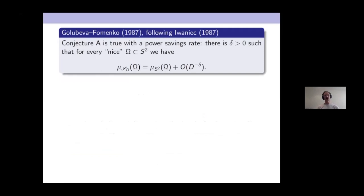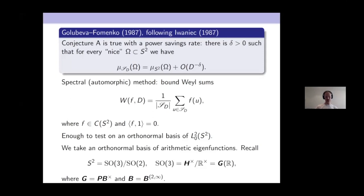I'm not quite sure whether to attribute the next theorem to Duke or to Golubeva-Fomenko. It states that Conjecture A is true with a power savings rate — the speed of equidistribution gains a power. This is done by spectral or automorphic methods. You write down the Weyl sums for the equidistribution problem: you test against continuous functions on the sphere, orthogonal to constants, and test on an orthonormal basis of L². We choose an arithmetic orthonormal basis, and this is much stronger than Linnik's result.